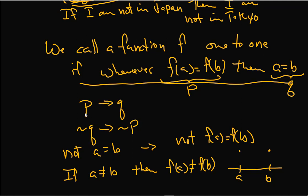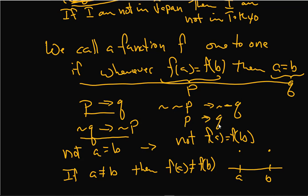Maybe we should have stated the definition of one-to-one this way instead of using its contrapositive, since they're equivalent. The contrapositive of the contrapositive brings you back to the original: you put 'not' on both sides again, and not-not P is just P, and not-not Q is just Q. So the contrapositive of this is that, and the contrapositive of that is back to this. Maybe we should have stated the definition of one-to-one as 'if A is not equal to B then F of A is not equal to F of B,' because they're equivalent.